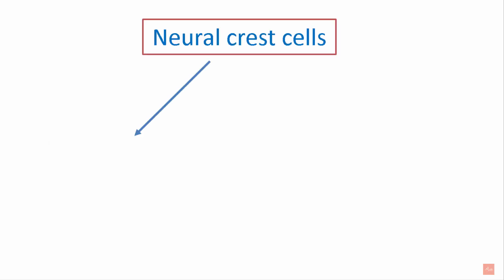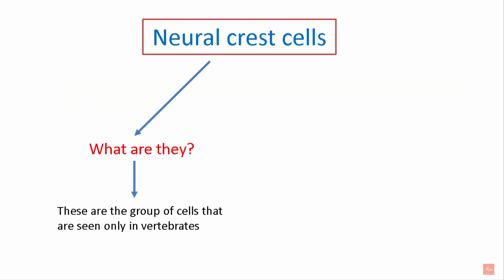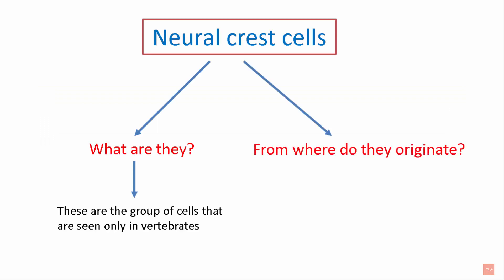Now, what are Neural Crest Cells? These are a group of cells that are seen only in vertebrates. They originate from embryonic ectoderm.